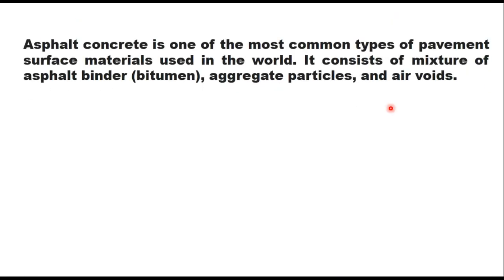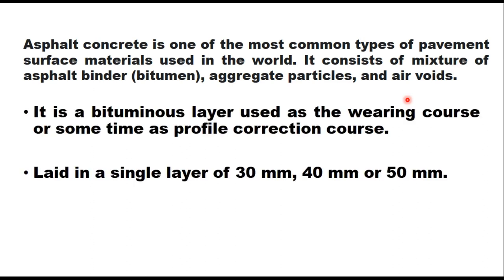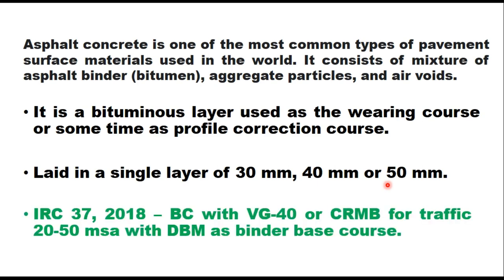Asphalt concrete is one of the most common types of pavement surface materials used around the world. It consists of a mixture of asphalt binder (bitumen), aggregate particles and some air voids. It is a bitumen layer which is generally used as wearing course, but sometimes it can also be used as profile correction course. It is generally laid in a single layer of 30 mm, 40 mm or 50 mm thickness. IRC 37:2018, the code on design of flexible pavement, suggests that when traffic is more than 20 million standard axles, the type of binder in the BC layer should be VG 40 or CRMB, and it should be laid on dense bituminous macadam as a binder base course.